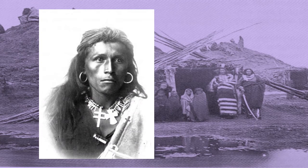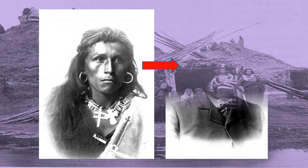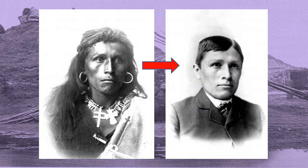The goal of the assimilationists was to take a young native man and turn him into someone else — this is the same person, before and after being 'civilized.' Gone are the markers of his Indian identity, replaced by a suit, a tie, and a haircut, to turn him into something that is not Indian. He even appears noticeably whiter, almost literally whitewashed into what Americans thought should be done with Indians.